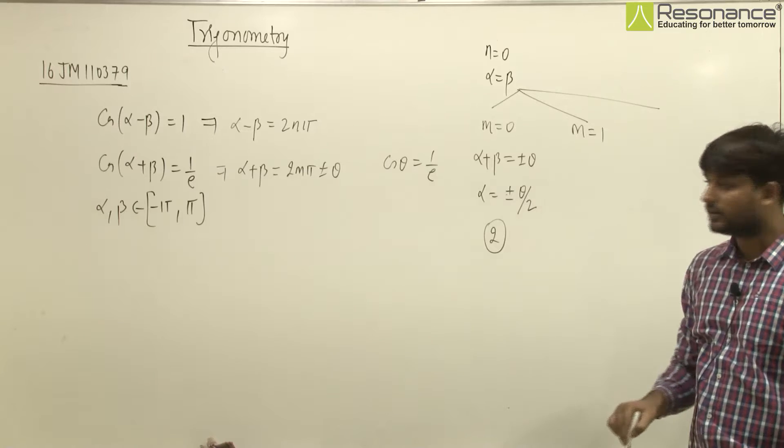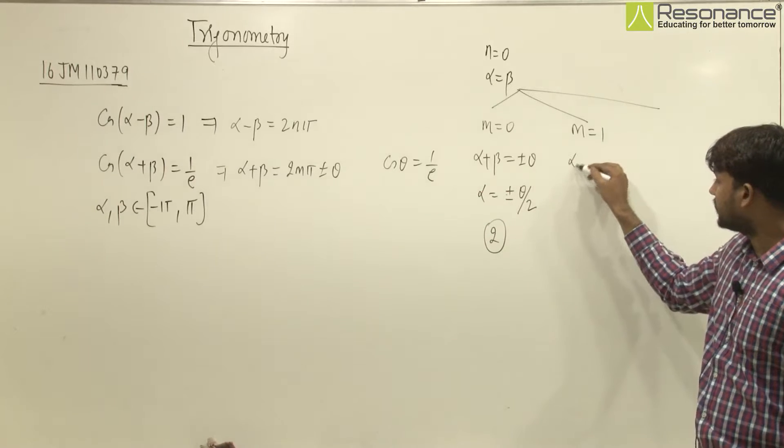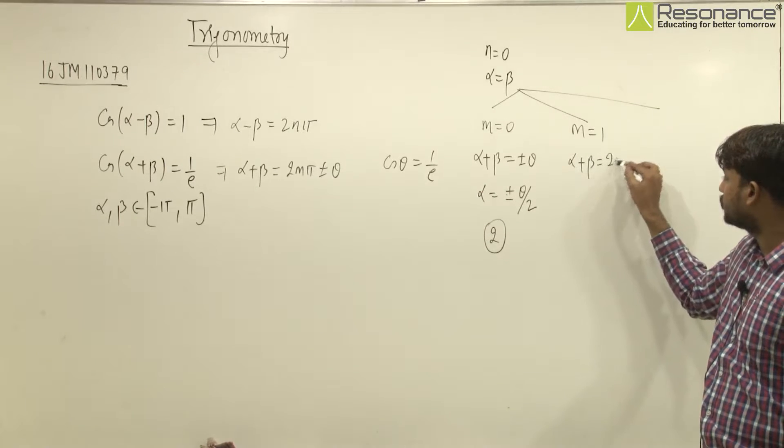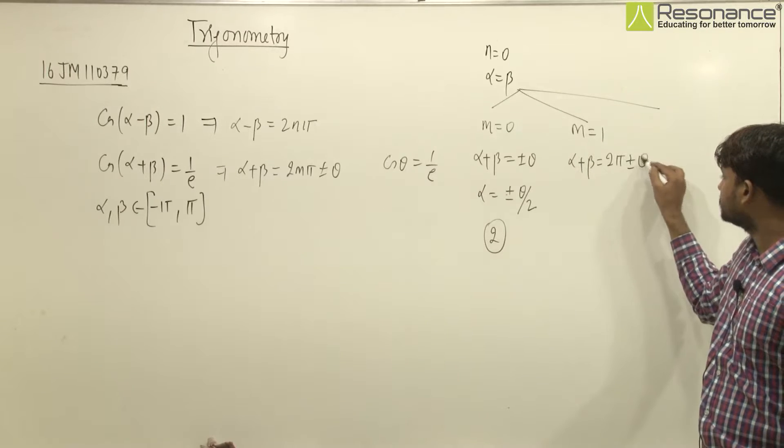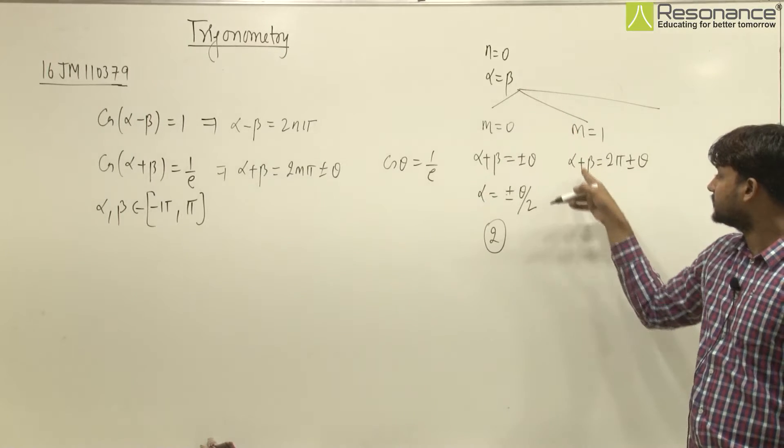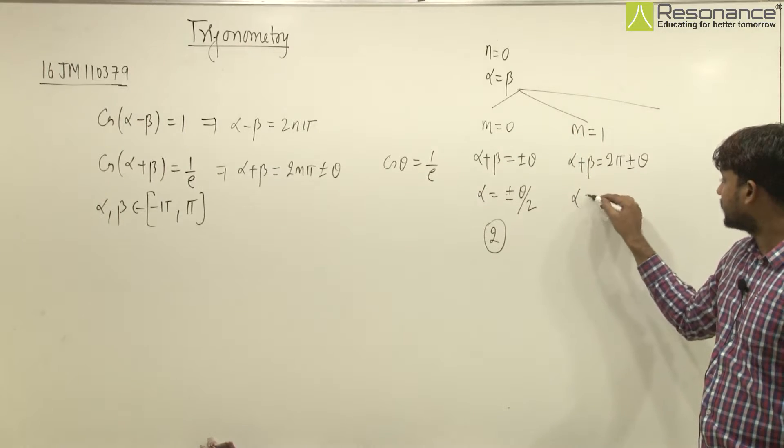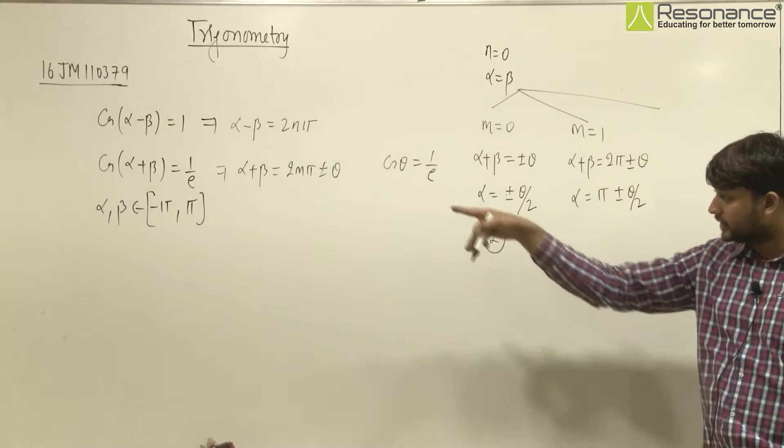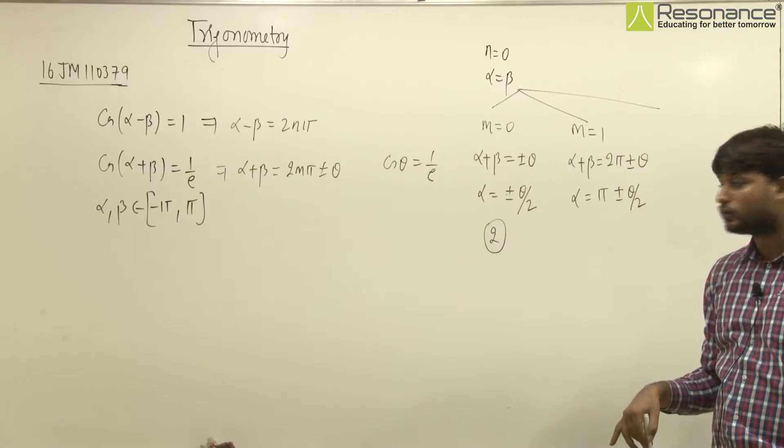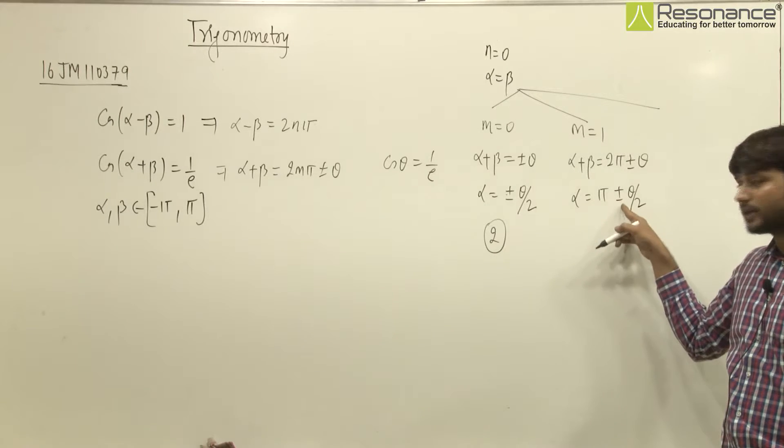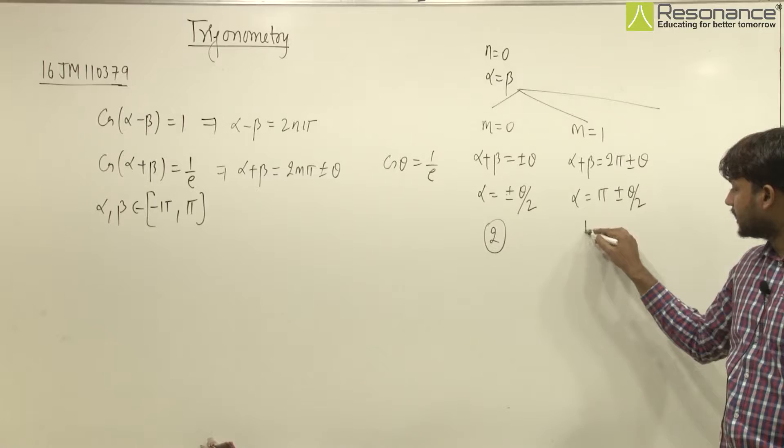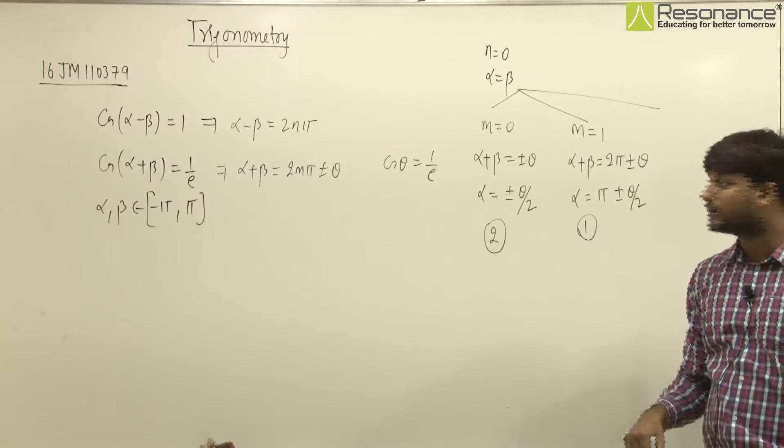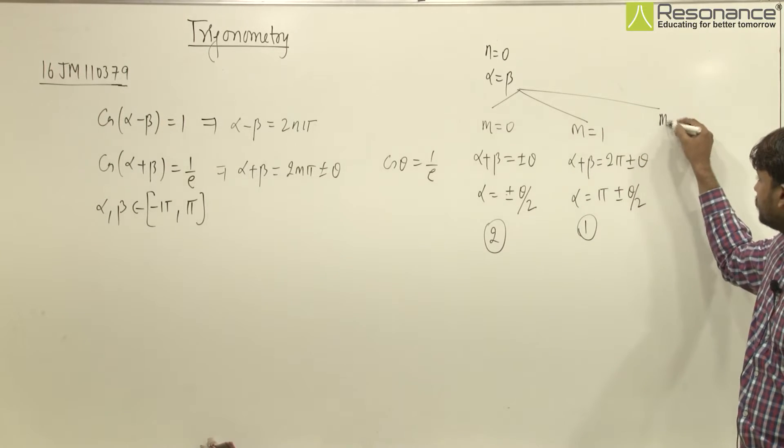Now further, m's value we take as 1, so we get alpha plus beta will be equal to 2 pi plus minus theta. Again alpha is equal to beta, so alpha equals pi plus minus theta by 2. Now if we check that interval, alpha goes from minus pi to pi, so which value will be accepted? With negative sign. So we get 1 ordered pair.